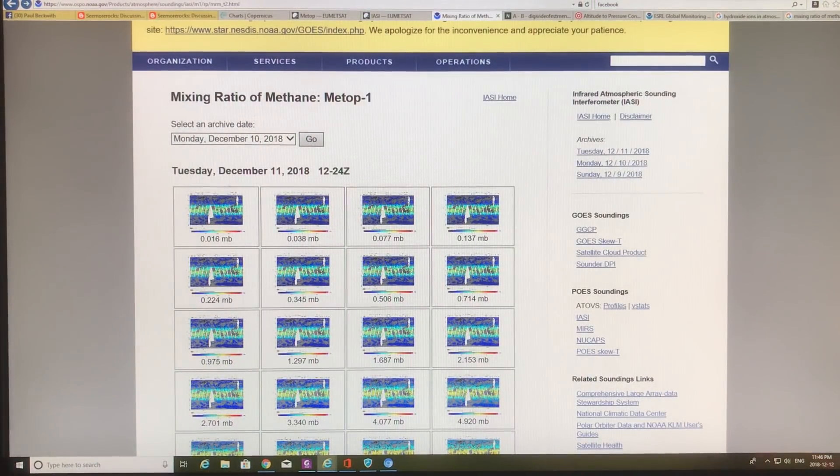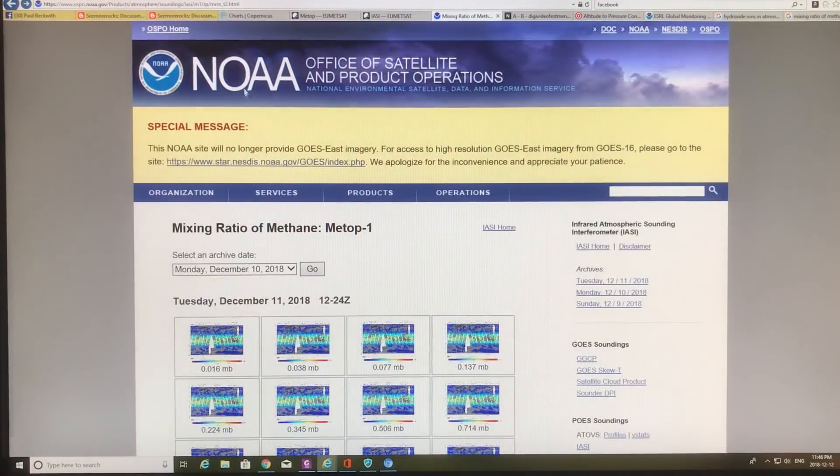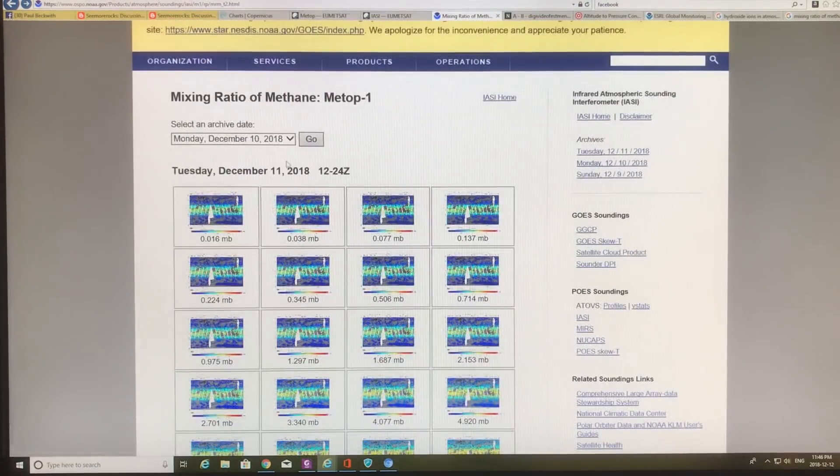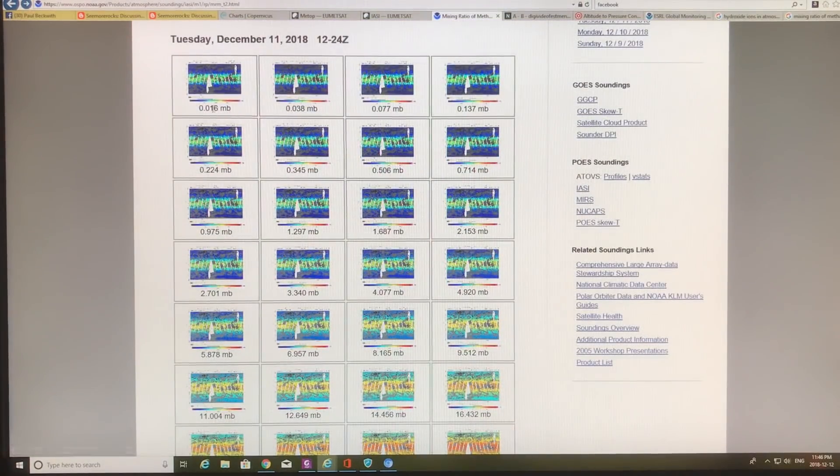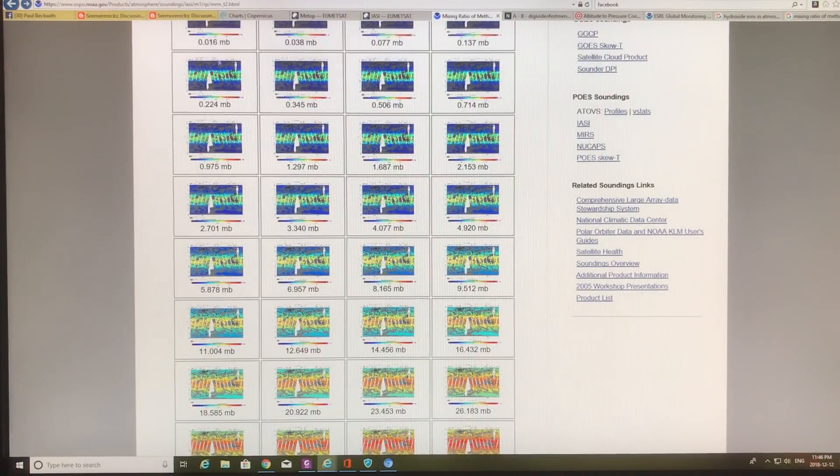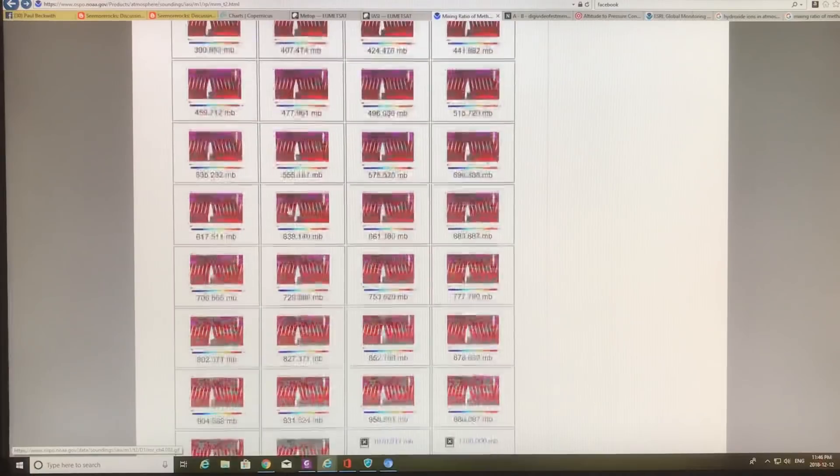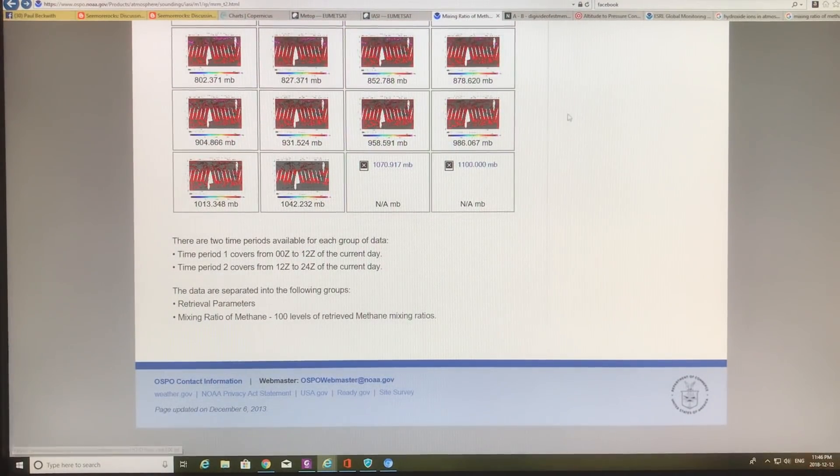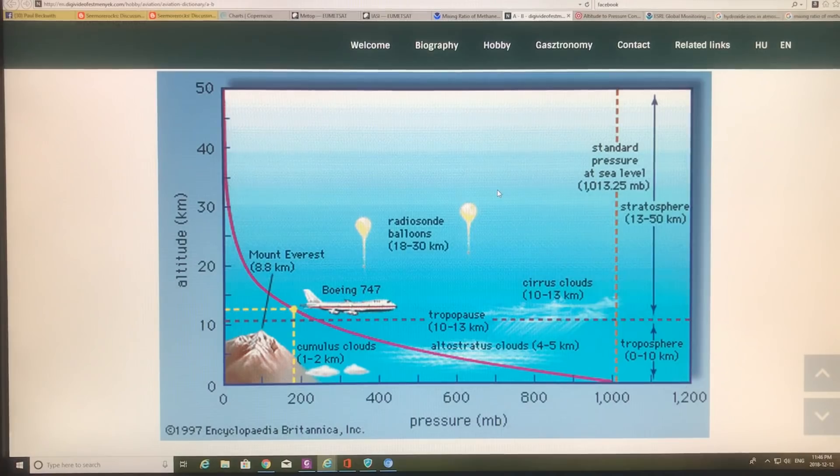If you just google mixing ratio of methane MEDOP1, you can find this NOAA product. The data is up to Monday, December 10th, and these are different pressures. The lower the pressure, the higher you are in the atmosphere until you go down to surface, which is about 1013 millibar. Let me just show you the atmosphere as you go from the surface. Gravity pulls down the air, so the pressure is highest at the surface, just over a thousand millibar. A thousand millibar is actually about two meters off the ground. 1013 would be the nominal number for the surface.